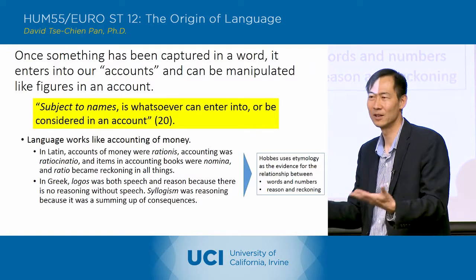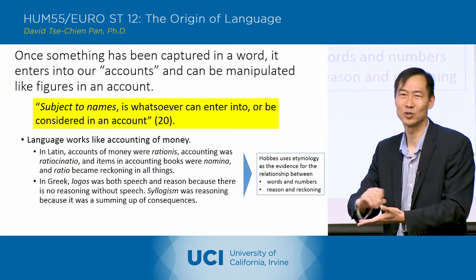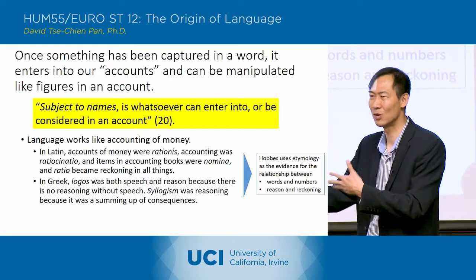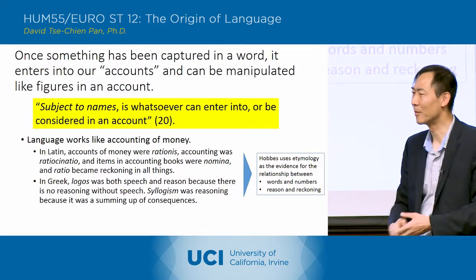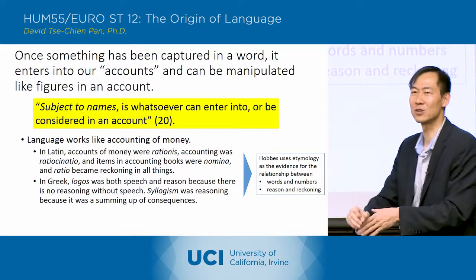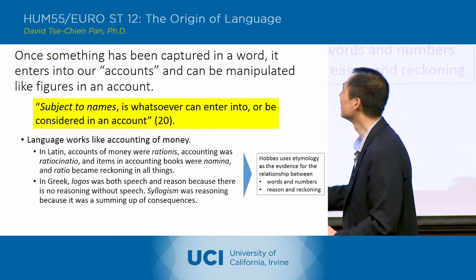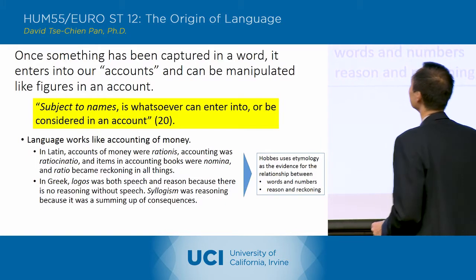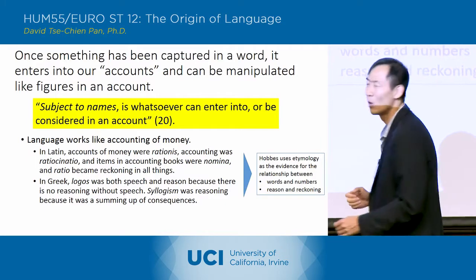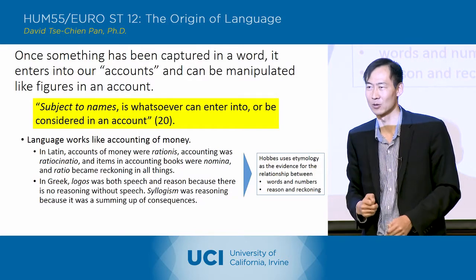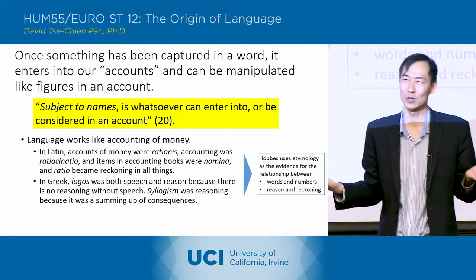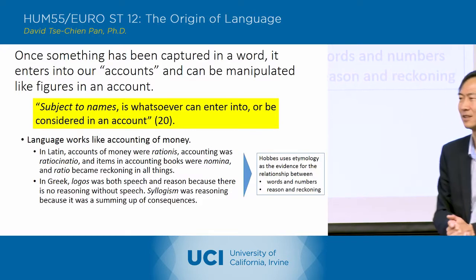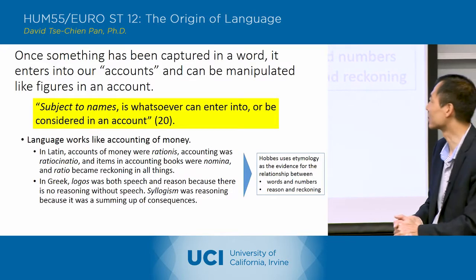If you're like a merchant doing your accounts of profits and losses, revenues and expenses, all of those figures are like words. He says, 'subject to names is whatsoever can enter into or be considered in an account.' It's a curious statement — words are like numbers in these accounting books.